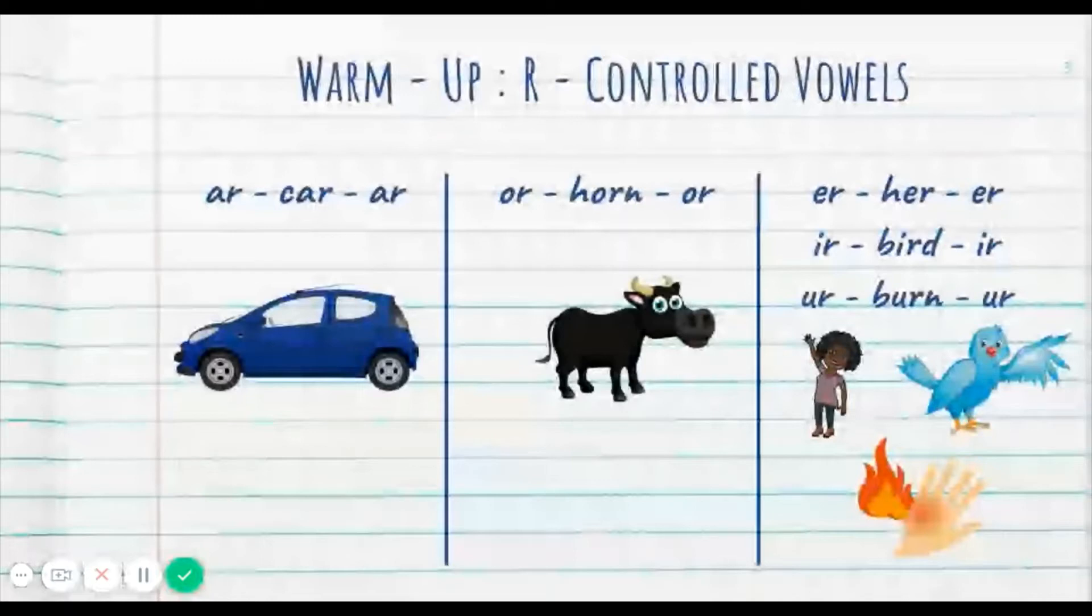So R controlled vowel just means that there's an R behind the vowel. And it's really hard to hear AH or A or O or AH. You really just hear that R. It's really strong. So let's practice. And hopefully, Ms. Howard won't get tricked again. Let's go.